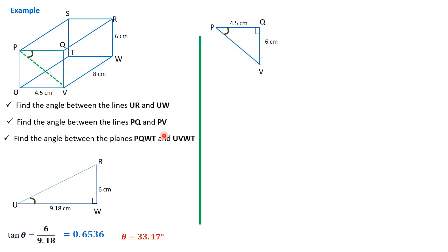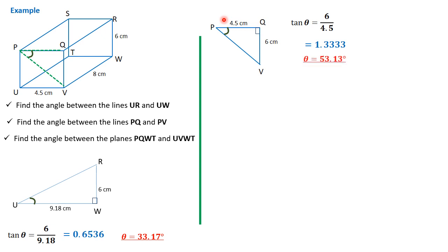We need to be able to see a right angle triangle. The angle between PQ and PV is this angle here, where the lines PQ and QV are perpendicular sides of a right angle triangle. Therefore, we're going to use trigonometry: tan theta — that is, tan of the angle we're looking for — is opposite over adjacent, which is 6 over 4.5, which is 1.3 recurring. Tan inverse of that will be 53.13 degrees. That's how we get the angle between PQ and PV.